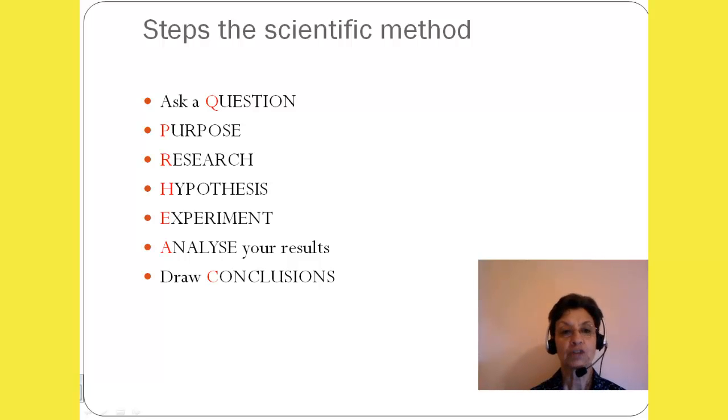Here listed are the steps of the scientific method. Ask a question. Then write a purpose for this particular study. We research. We research background information, things that are necessary for us to conduct the research or even to write a hypothesis. We experiment, conduct the experiment in a variety of ways, and we jot down as much data as we can gather.